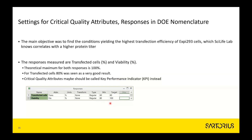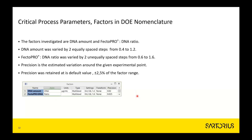The specifications were that transfected cells and viability should both be high, ideally 80% and 100% above a certain minimum setting. The critical process parameters were the amount of DNA added and the ratio. DNA amount was changed in three steps: 0.4, 0.8, and 1.2, and the ratio at 0.6, 0.8, and 1.6, with non-equidistant distances between the different settings.